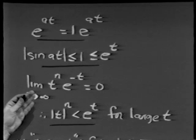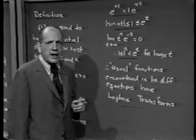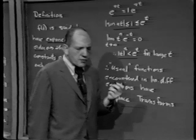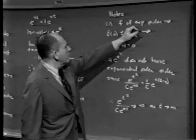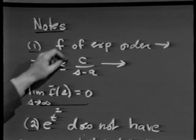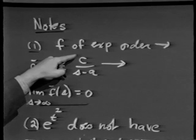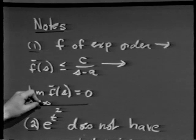The important point is that the usual functions encountered in linear differential equations with constant coefficients have Laplace transforms. We've already seen that if f has exponential order, f-bar of s must be no greater than the Laplace transform of c times e to the at, which is c over s minus a. Since c and a are constants, as s goes to infinity, f-bar of s goes to 0. So for sufficiently large values of s, the Laplace transform — the area under the curve — goes to 0 as s increases without bound.